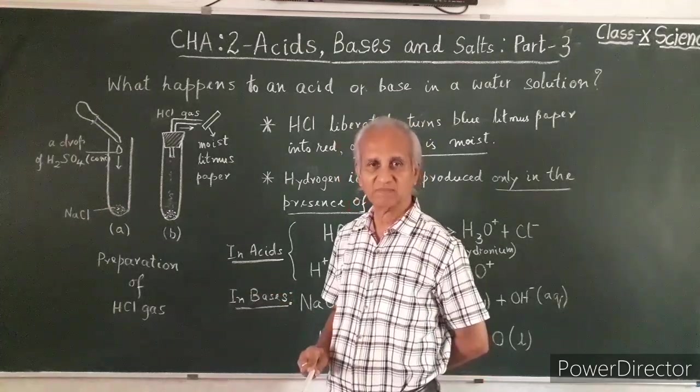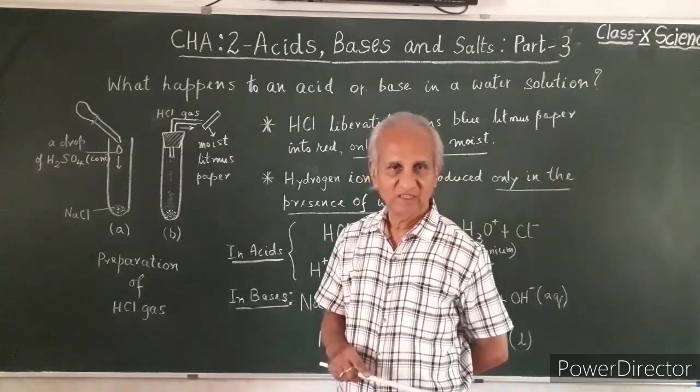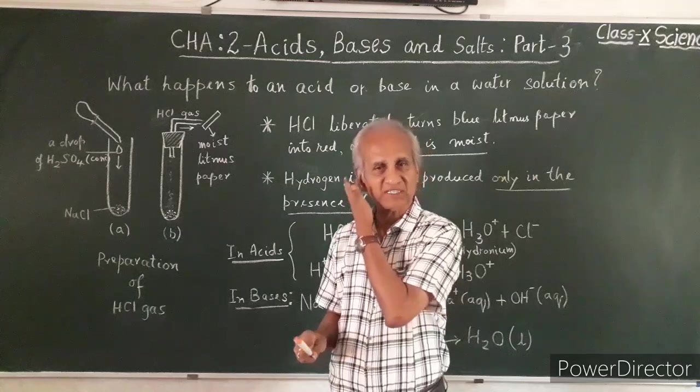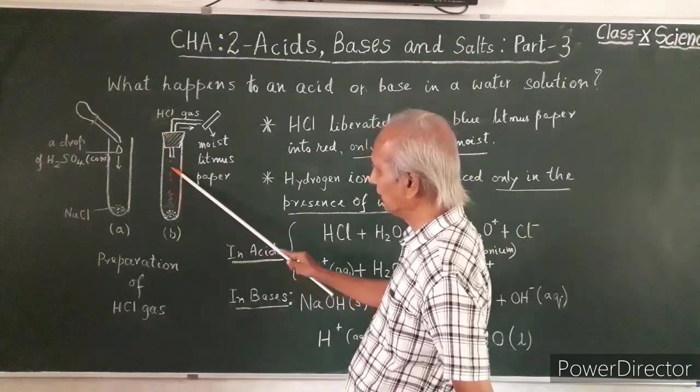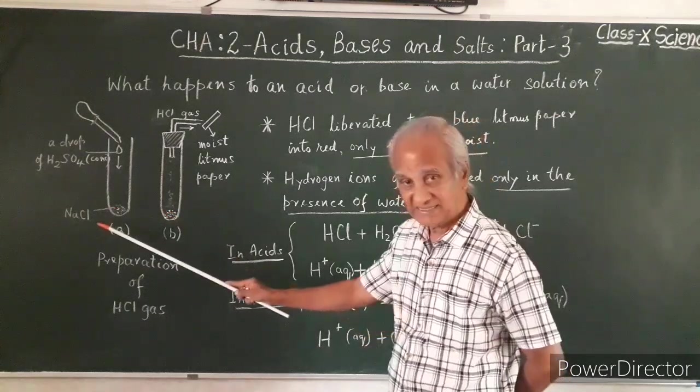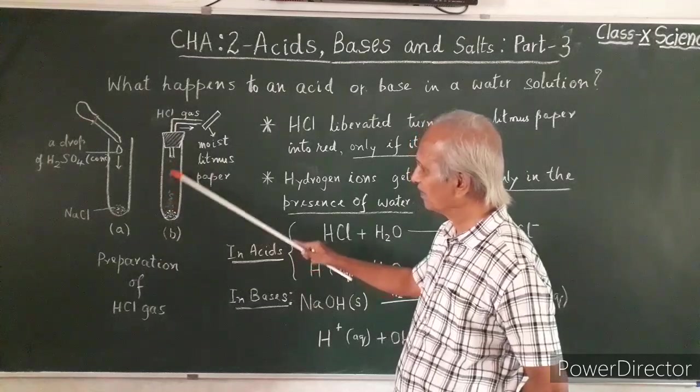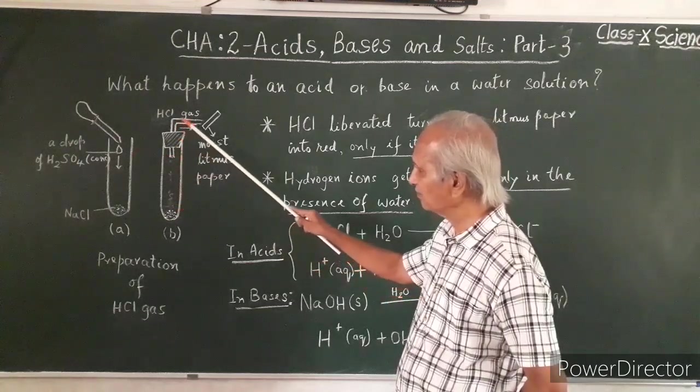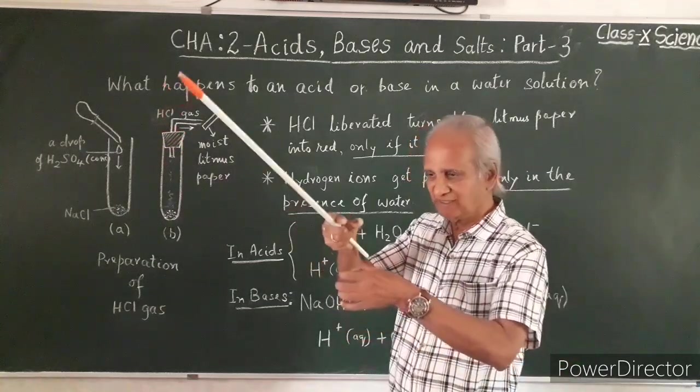The drop falls on sodium chloride powder and there will be a quick reaction between an acid and a base. Hydrogen chloride gas has got liberated. NaCl plus H2SO4 gives HCl gas. Immediately put a cork with a delivery tube so the gas can pass through.